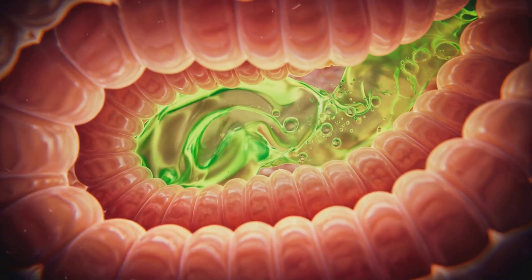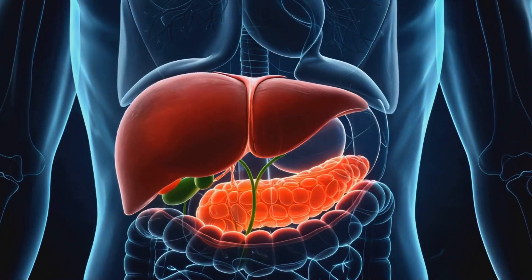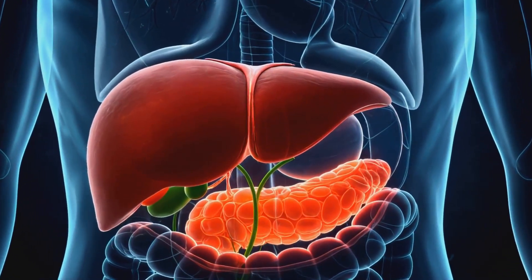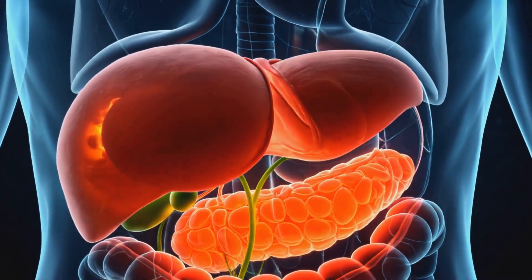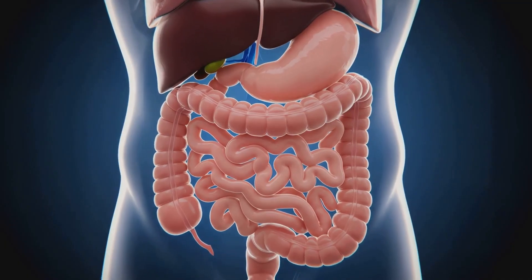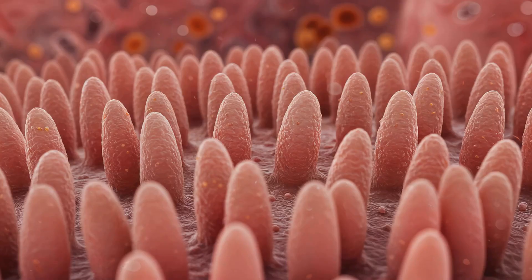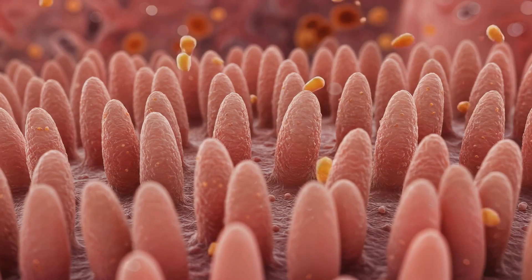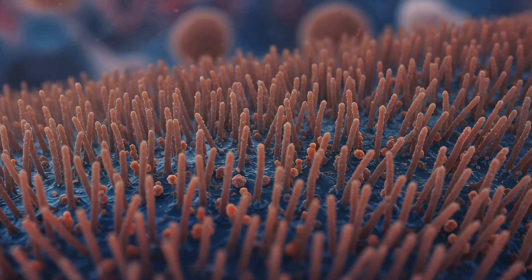In the small intestine, enzymes complete macronutrient digestion. Absorptive enterocytes use transporters to uptake glucose, amino acids, and fatty acids. Surface area is greatly expanded via villi and microvilli, maximizing absorption efficiency.